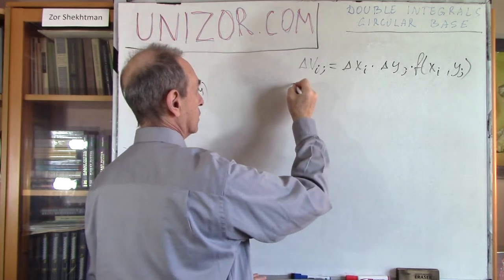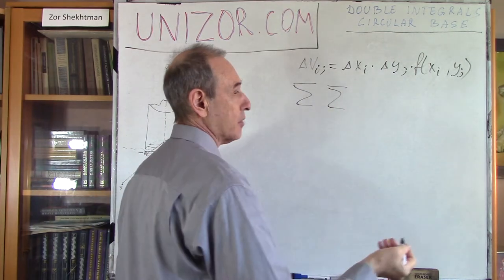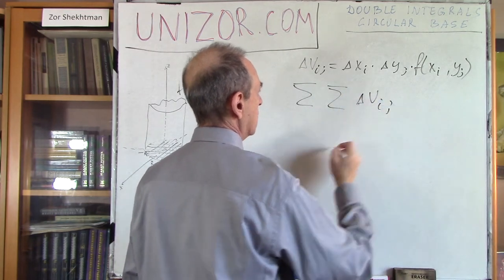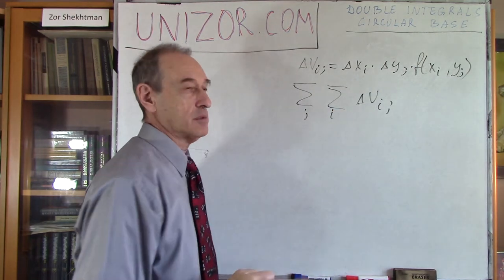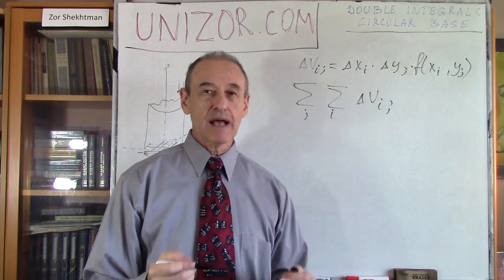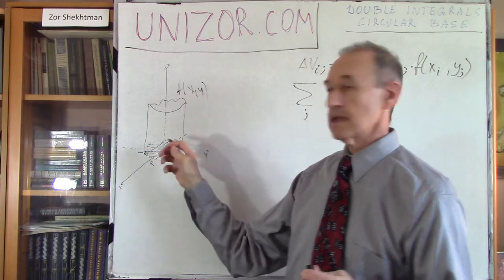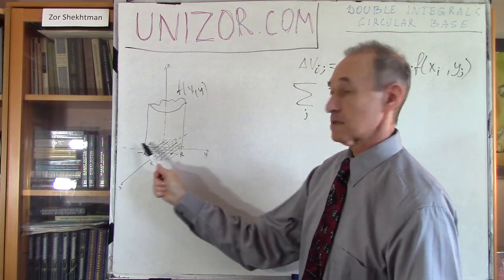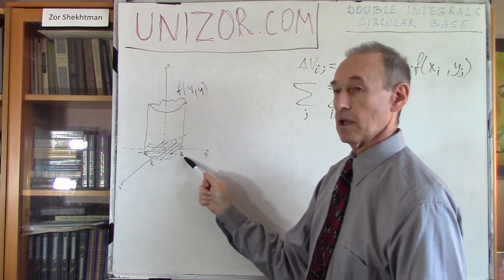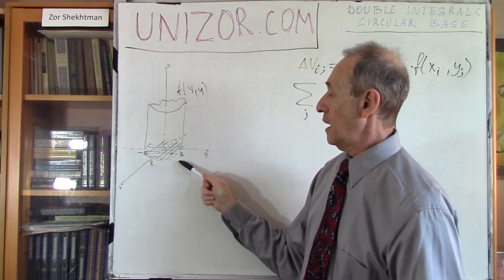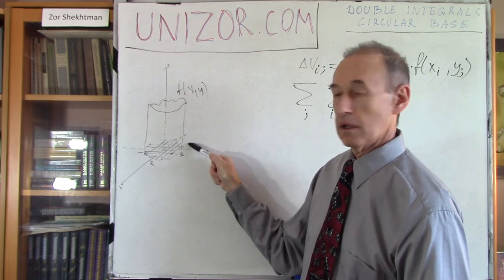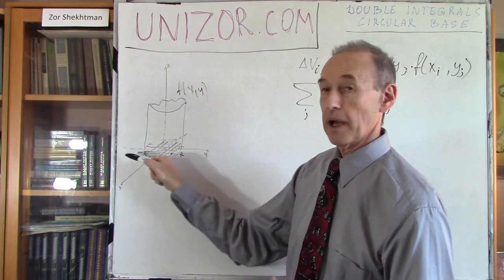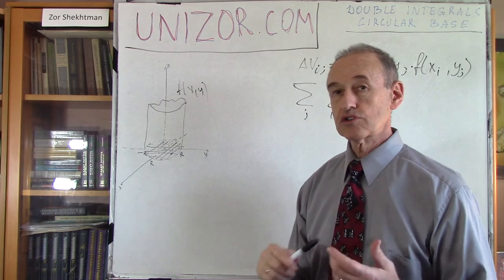What we have to do is calculate the sum of delta v_ij, summarizing by i and by j. This is exactly the difference between the circular base and the rectangular base. In the case of rectangular base, we can do the summation by x from zero to maximum m, and for each of those have summation by y from zero to n — or the other way around, it doesn't really matter. In the circular case, the situation is a little more complex.